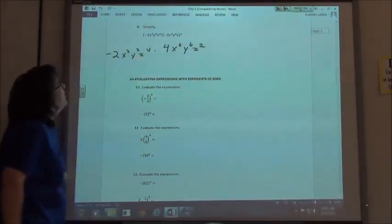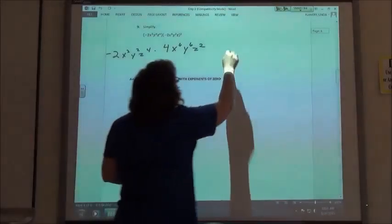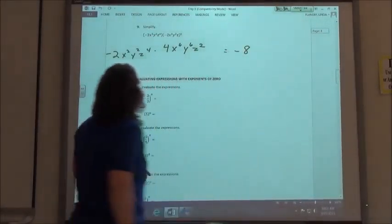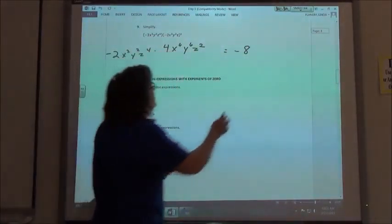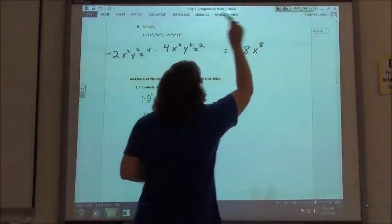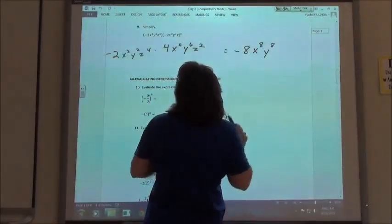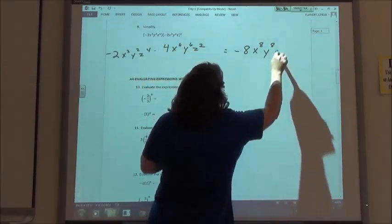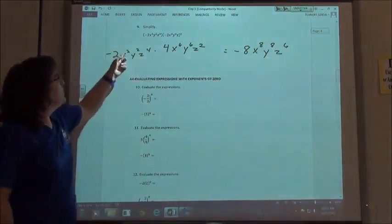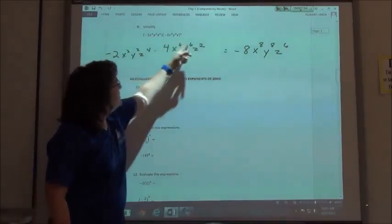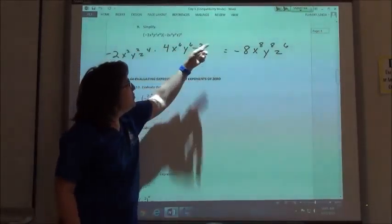So multiplying that out, I would have negative 8, x squared times x to the 6th. I add my exponents, so x to the 8th, y is also going to be to the 8th, and z is going to be to the 6th. So 2 plus 6 is 8, 2 plus 6 is 8, and 4 plus 2 is 6.